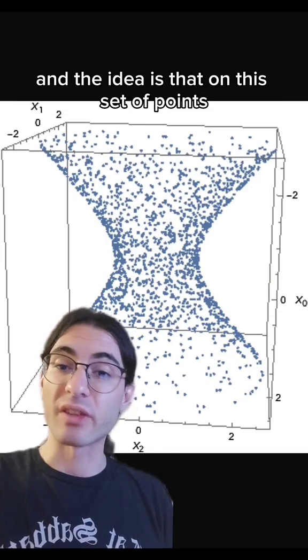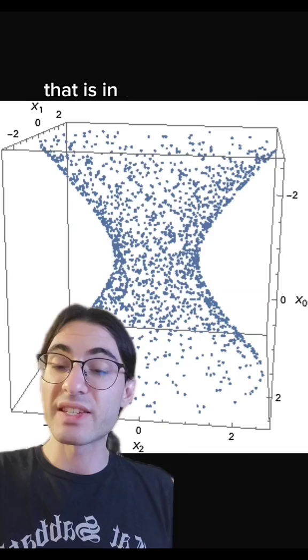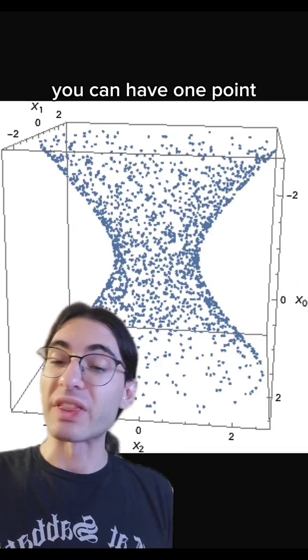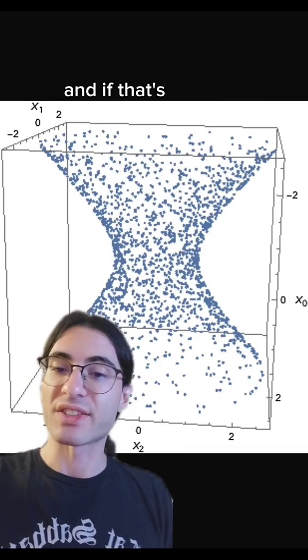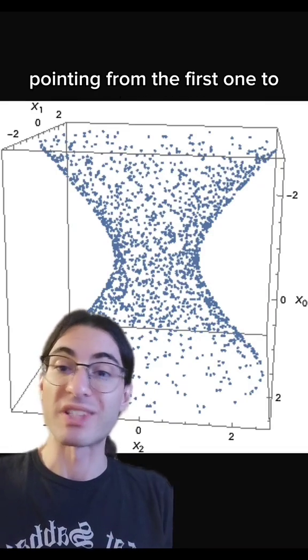And the idea is that on this set of points, there is a relationship on them known as a partial ordering. That is, in this set of points, you can have one point that is in the future of another point. And if that's the case, you might join those two points by an arrow pointing from the first one to the second one.